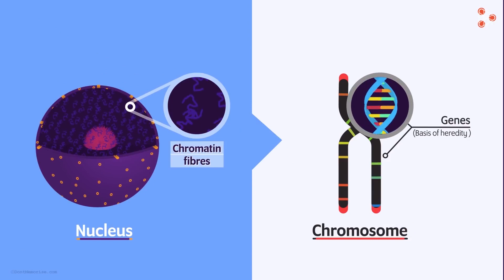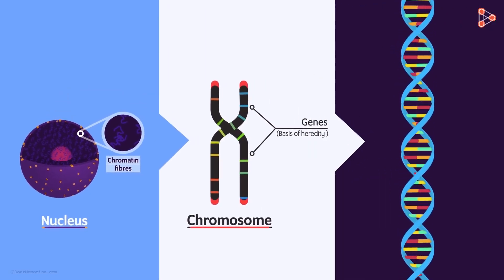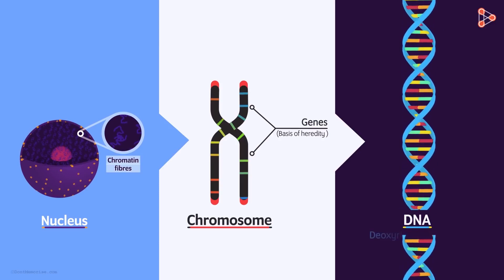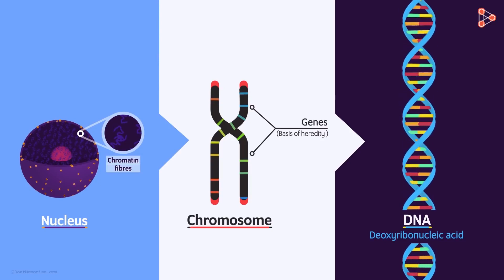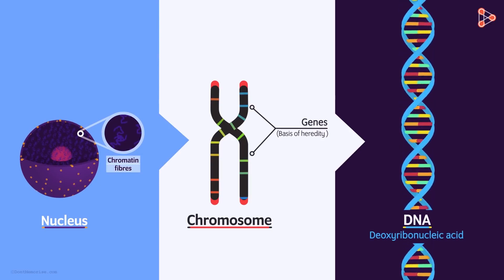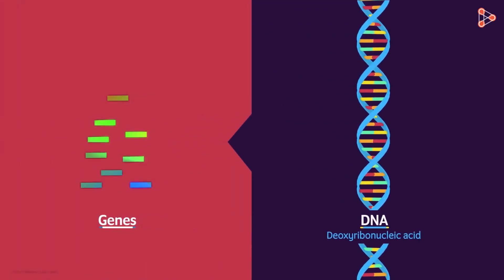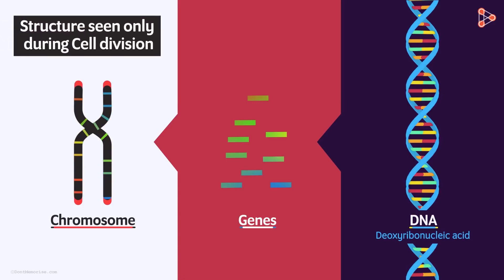Now, let us zoom in a bit more. What are these functional segments named genes made up of? Genes are made up of molecules of DNA — deoxyribonucleic acid, abbreviated as DNA, forms the genes. So if we go in the reverse manner, we have DNA molecules forming functional segments called genes, and many such genes come together to form the chromosomes. However, the compact chromosomal structure exists only when the cell is about to divide.